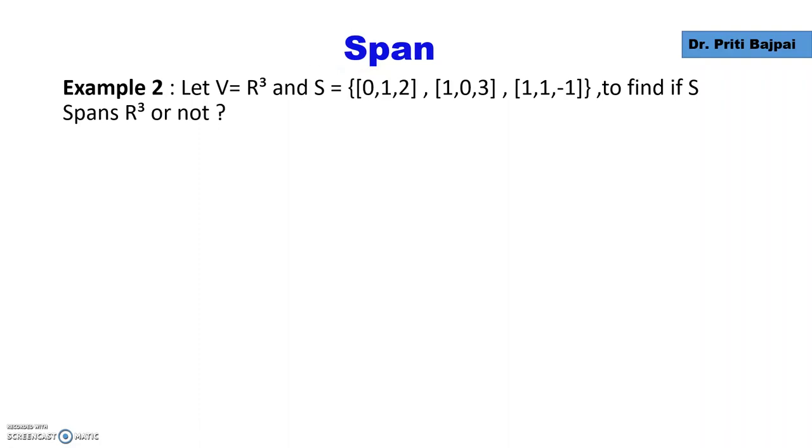In the second example we take the vector space R³ and let's say the subset is [0,1,2], [1,0,3], and [1,1,-1] - three vectors in our subset. If we want to find if S spans R³, we start by taking some vector [X,Y,Z] from R³ and write X,Y,Z as a linear combination of the vectors given in S.